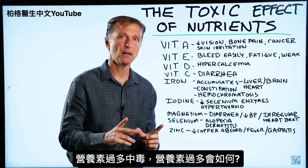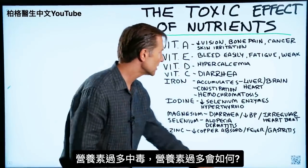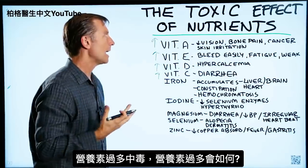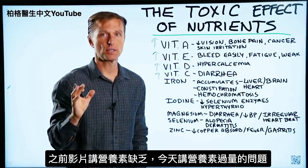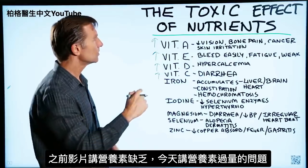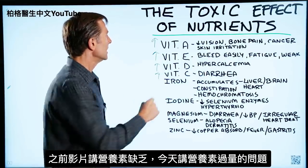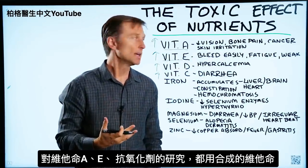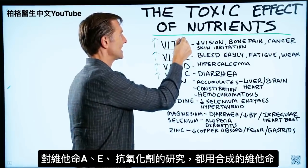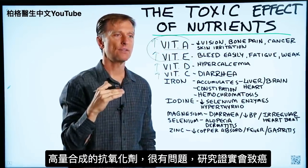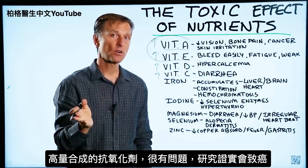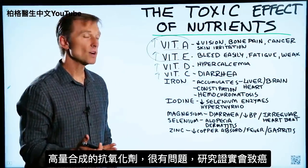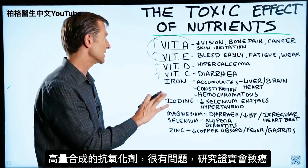Today we're going to talk about the toxic effect of nutrients — specifically excessive, toxic amounts of certain nutrients and what can happen if you take too much. In all the other videos we talk about deficiencies; today we're going to reverse that and talk about the opposite effect. When studies were done on vitamin A, vitamin E, and some other antioxidants, you have to realize they used synthetics. When you take high amounts of synthetic antioxidants, it can create a lot of problems. They didn't use natural food-based antioxidants — they used synthetics.